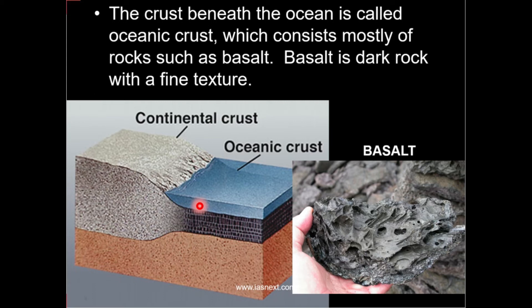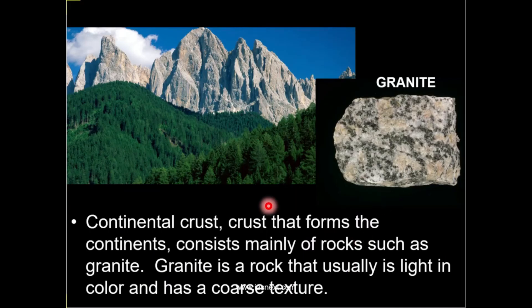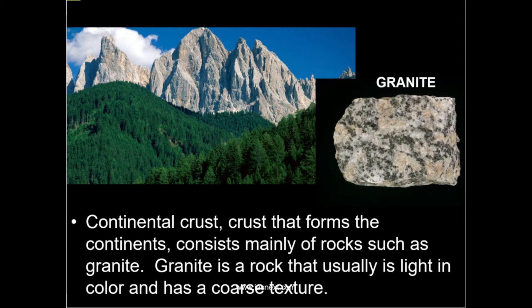The discontinuity between upper crust and lower crust is also known as the Conrad discontinuity. We can divide the crust into two parts: upper crust and lower crust. Oceanic crust consists mostly of rocks such as basalt, which is a dark rock with fine texture. Continental crust that forms continents consists mainly of rocks such as granite, which is a rock of usually light color. So oceanic crust is made of basaltic rock while continental crust is of granitic rock.